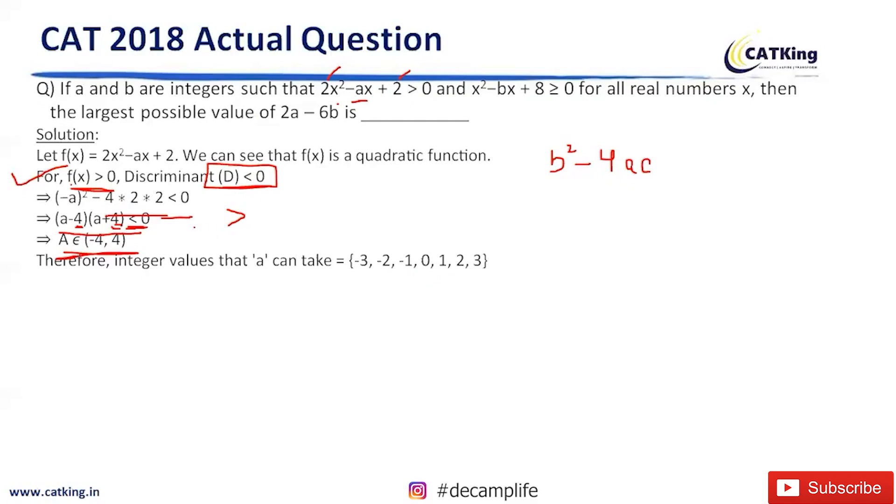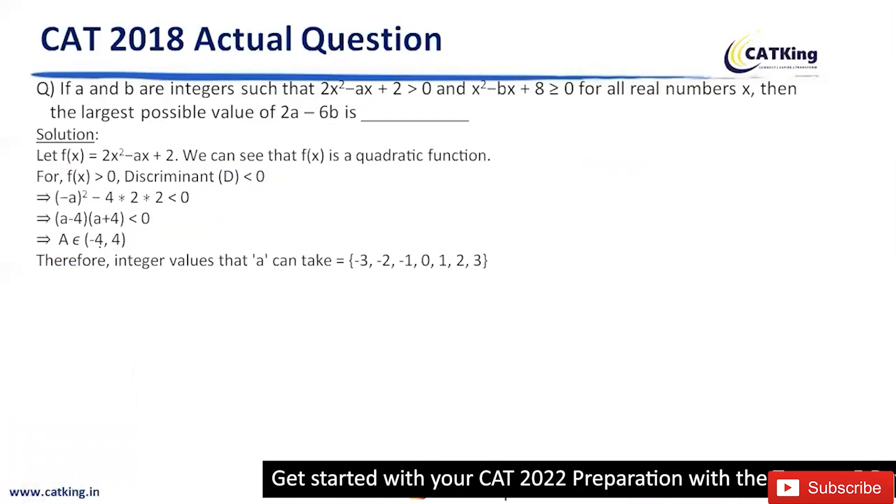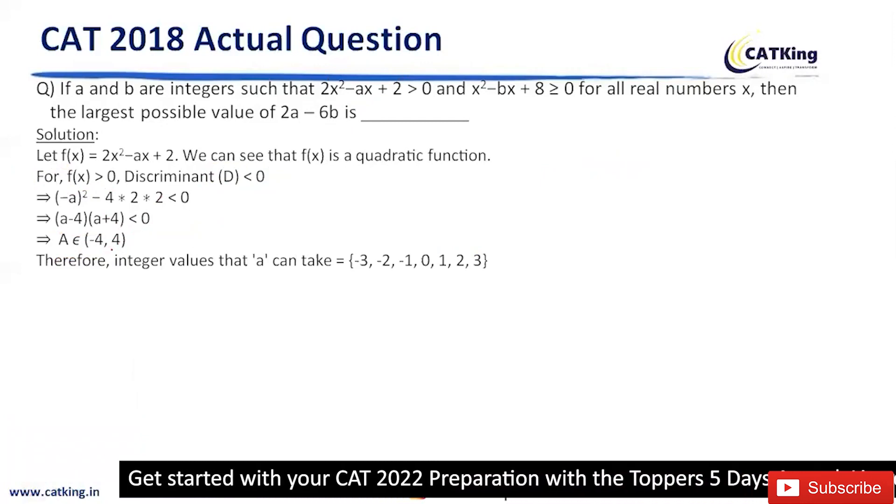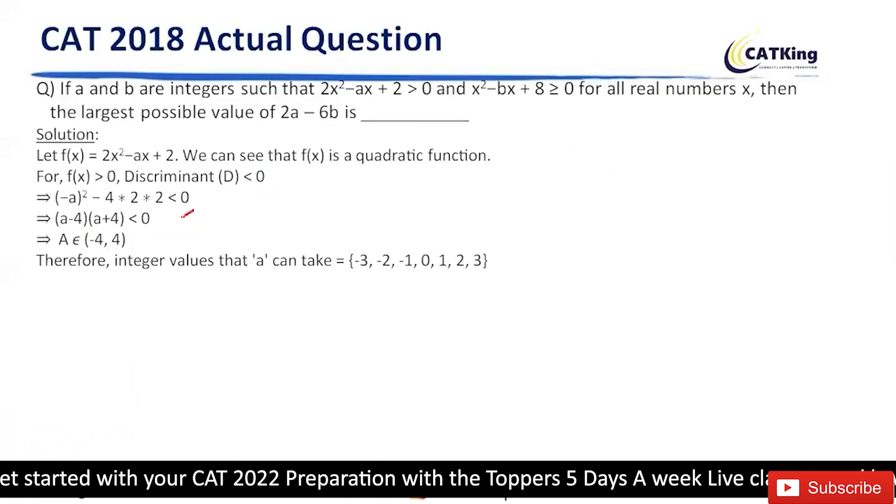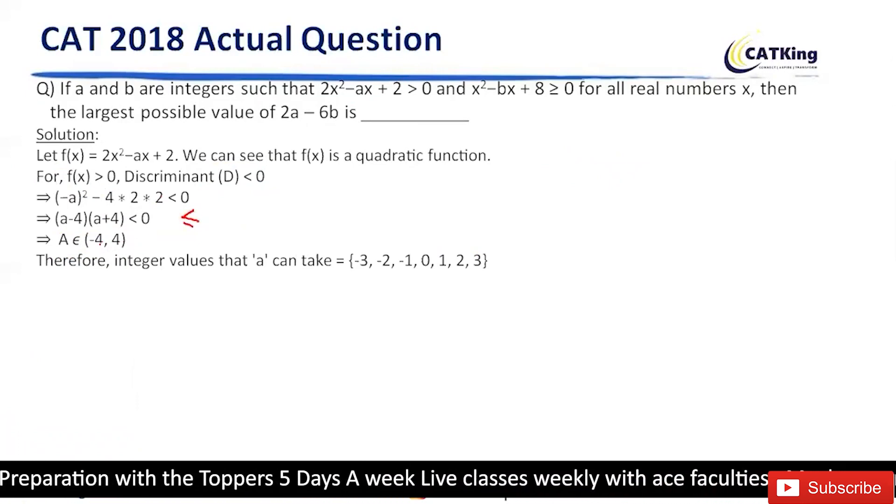See, this is less than 0, so value will not include the numbers -4 and 4. But here it is less than equal to 0, so that means -4 and 4 will be included. It is a very minute difference but it will make a lot of difference.